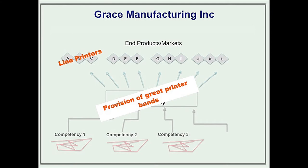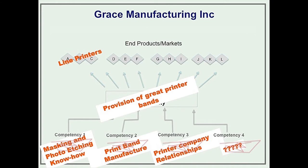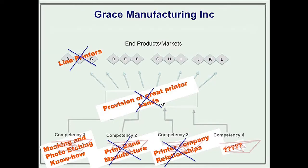Linking back to our model: the end product market Grace Manufacturing was serving was line printer manufacturers and customers who needed replacement print bands. Grace Manufacturing had a strategic capability in the provision of great printer bands and was very good at what it did. To allow it to do that it had competencies in several areas — in particular know-how in masking and photo etching, the process by which you produce detail onto thin print bands. It also had print band manufacturing competency and a relationship with the printer manufacturing companies. But with the replacement of line printers, the market for print bands was disappearing, and this strategic capability was becoming obsolete.